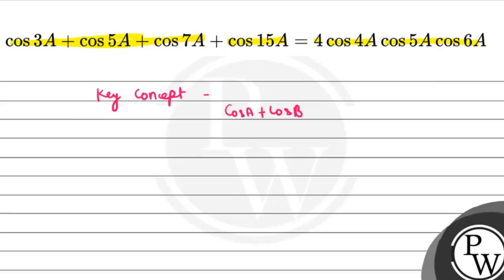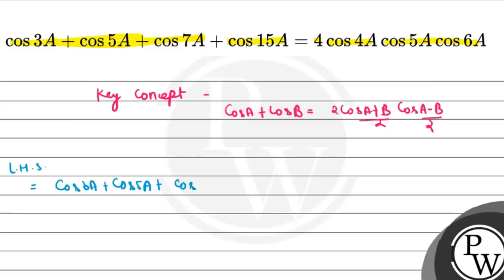The key concept is: cos A plus cos B equals 2·cos((A+B)/2)·cos((A-B)/2). Here the LHS part is cos3a plus cos5a plus cos7a plus cos15a. We can regroup this as cos3a plus cos7a, and cos5a plus cos15a.